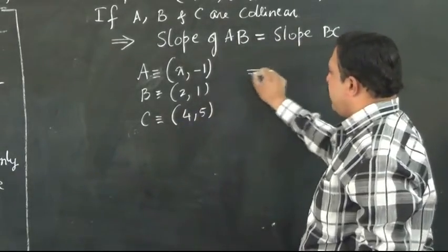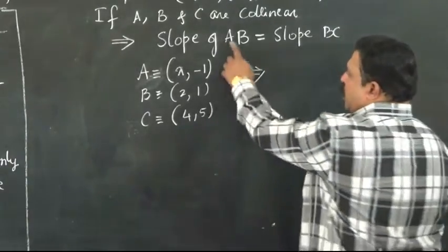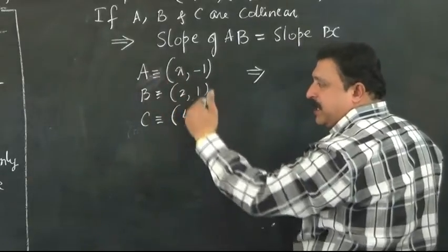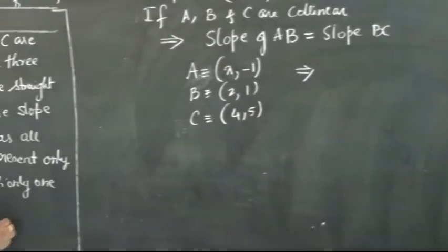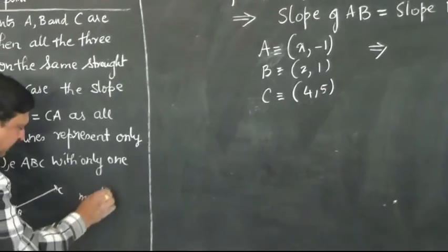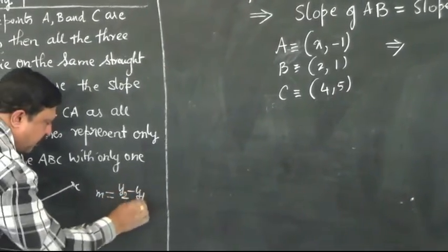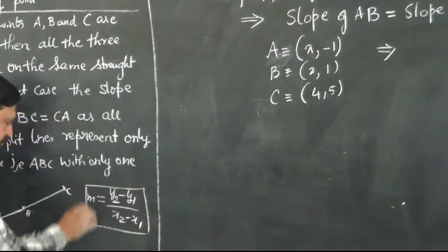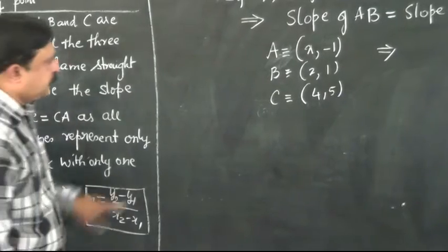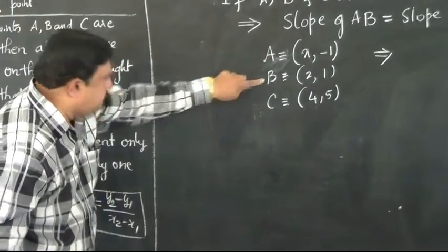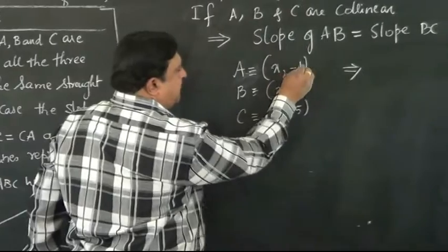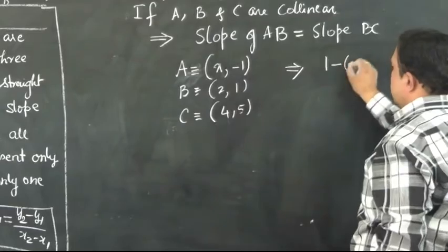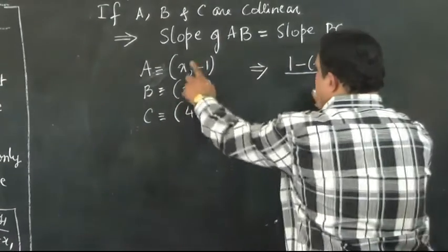Now write slope of AB. This implies slope of AB - slope formula is y2 minus y1 divided by x2 minus x1. You know that the slope of a line is given by this formula. Between points A and B, this is x1, y1, x2, y2, so y2 minus y1: 1 minus (-1) divided by 2 minus x.